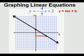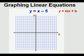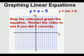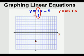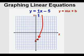Let's look at this last one. Stop the video and graph the equation, then restart to see if you worked it correctly. First we mark the y-intercept at negative 5. Since the x-term has no coefficient, the slope is 1, which in fraction form is 1 over 1. We draw the rise of positive 1 and the run of positive 1, mark our second point, and draw the line through the two points.